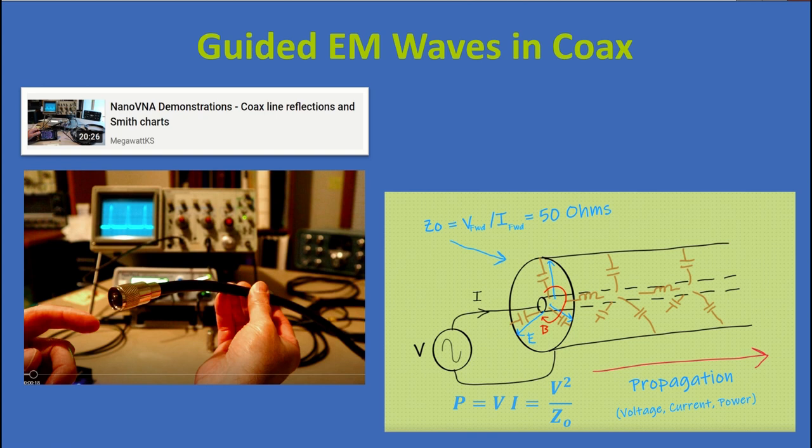These are a couple of screenshots from a different series on this channel called the Nano VNA series. And in that, we looked at a transmission line, in particular a coax, and talked about signal reflections on that coax. Forward traveling waves and backward traveling waves and SWR and return loss and things that some of you know about. But here, let's just look at what that coax configuration looks like. It has a center conductor and an outer conductor.